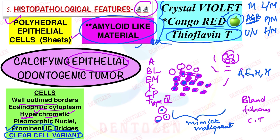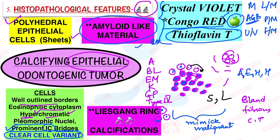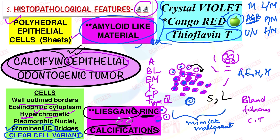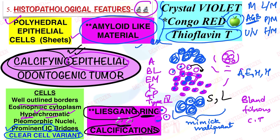This amyloid-like material is produced within the cells intracellularly and can be secreted outside into the extracellular compartment, and can be present in small or large quantities. Another characteristic feature is calcifications — ring-like calcifications called Liesegang ring calcifications. These concentric ring calcifications form within the globules of amyloid and can fuse together to form large masses. So the three important histopathological points are: polyhedral epithelial cells, amyloid-like material, and Liesegang ring calcifications.